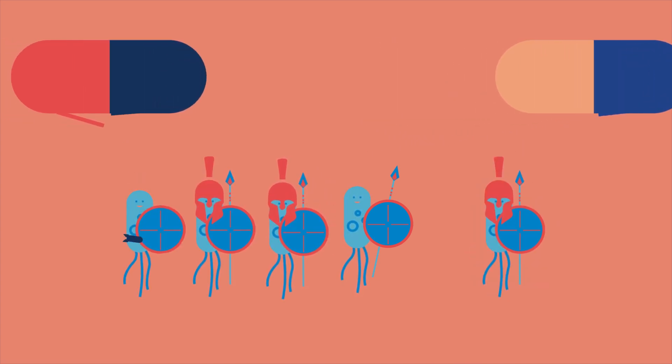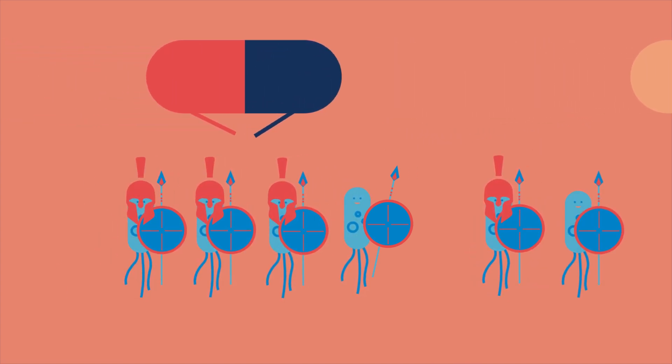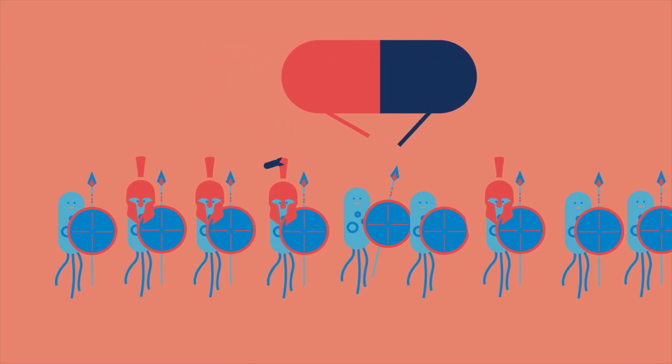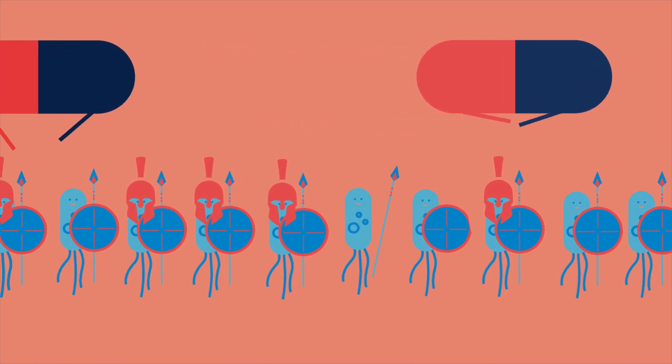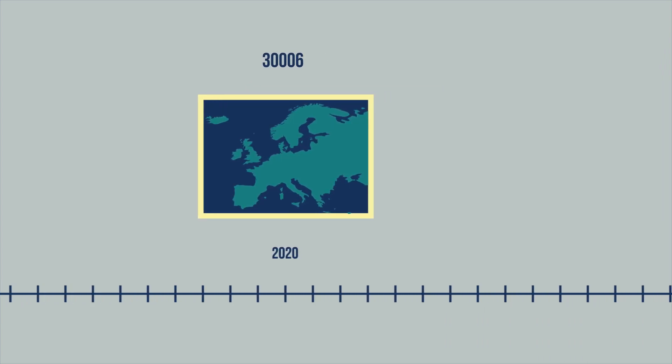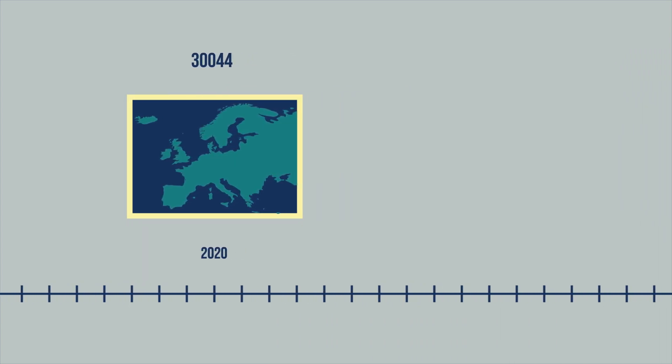Since bacteria multiply rapidly, resistant bacteria can develop very quickly and are almost insensitive to antibiotics. In Europe alone, more than 30,000 people die a year from drug-resistant infections.